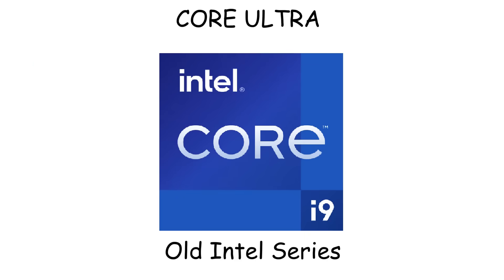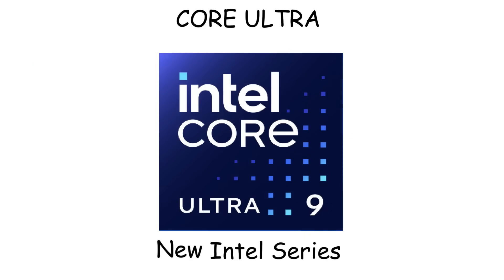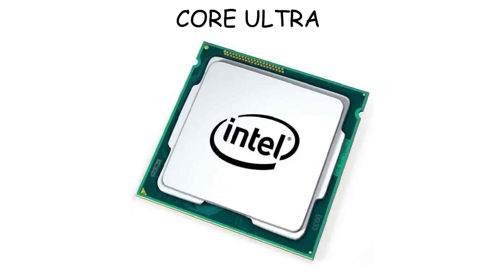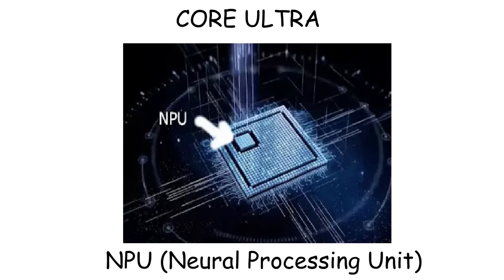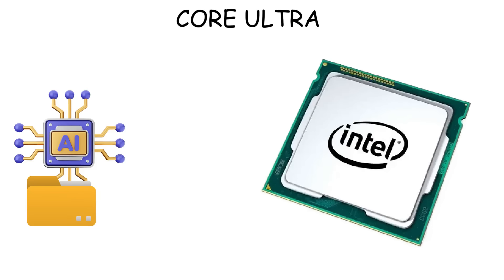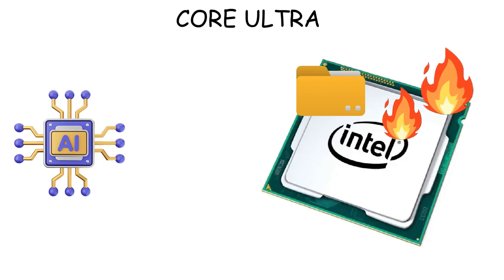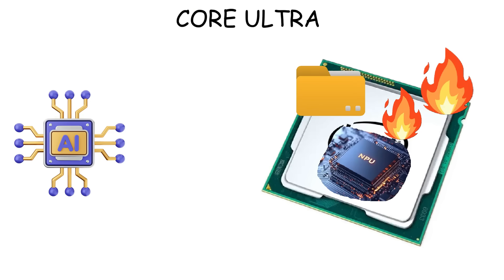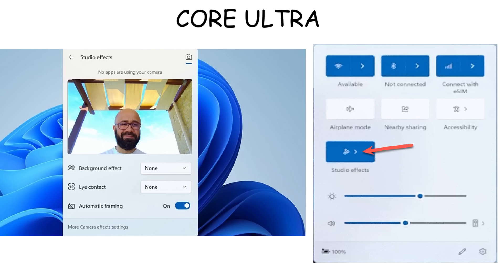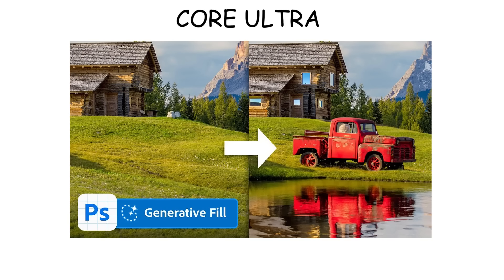Intel Core Ultra series is the newer generation of the usual Core i series, and you can find them in high-end laptops like Asus ROG and Lenovo Legion. What makes the Core Ultra series different is it has a built-in NPU inside the processor. NPU is a chip that handles tasks related to artificial intelligence, so instead of burdening every task to your CPU — which can make it hotter and consume more wattage — those tasks will be handled by the NPU, making your laptop run cooler. Real-life examples include automatic background blur for video calls in Windows Studio Effects and the AI generative fill feature in editing software like DaVinci Resolve and Photoshop.